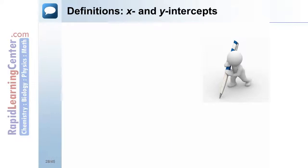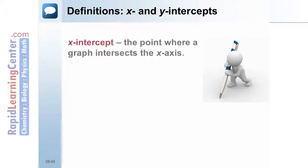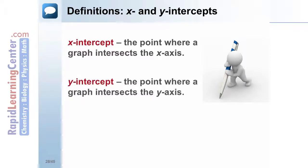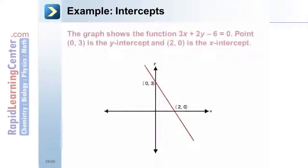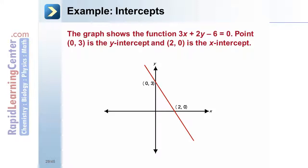Definitions — x and y intercepts: an x-intercept is the point where a graph intersects the x-axis. A y-intercept is the point where a graph intersects the y-axis. Example — intercepts: the graph shows the function 3x plus 2y minus 6 equals 0. The point (0, 3) is the y-intercept and (2, 0) is the x-intercept.